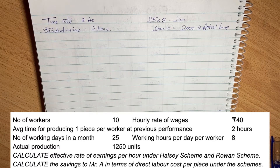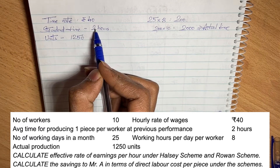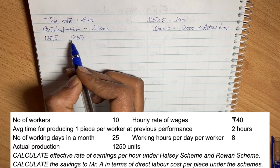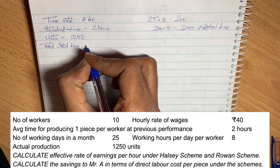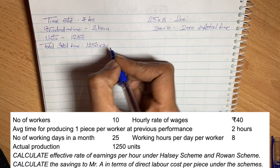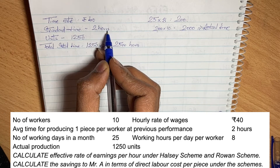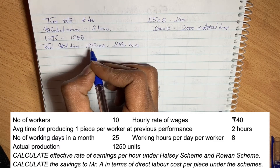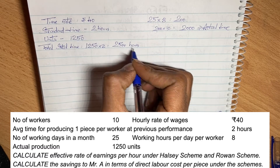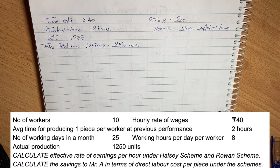The actual production during the month is 1,250 units. Since the standard time to produce one unit is 2 hours, the total standard time for 1,250 units = 1,250 into 2 = 2,500 hours. But workers actually worked only 2,000 hours, so they saved 500 hours. This means they worked more efficiently.